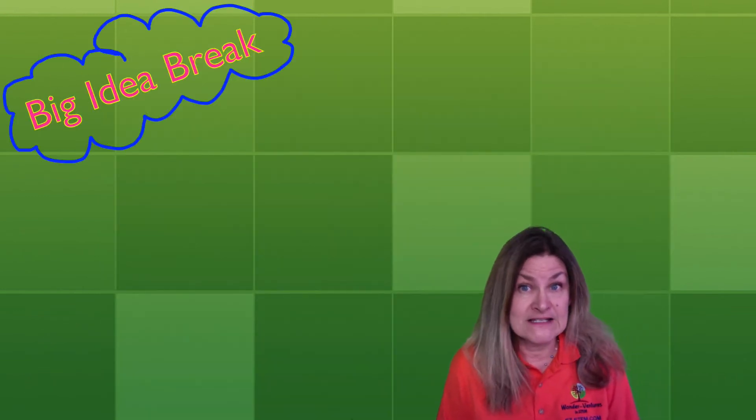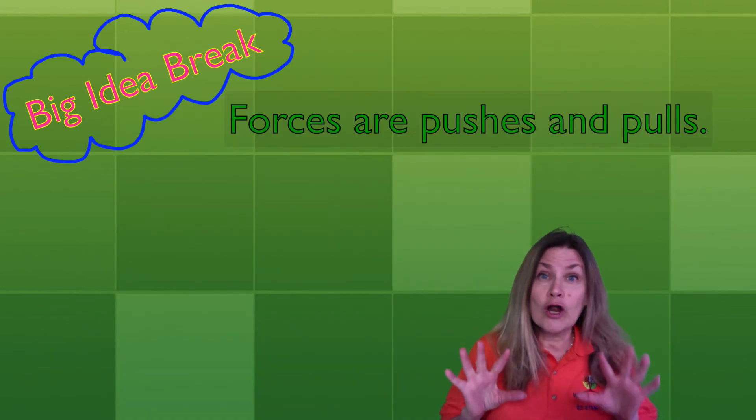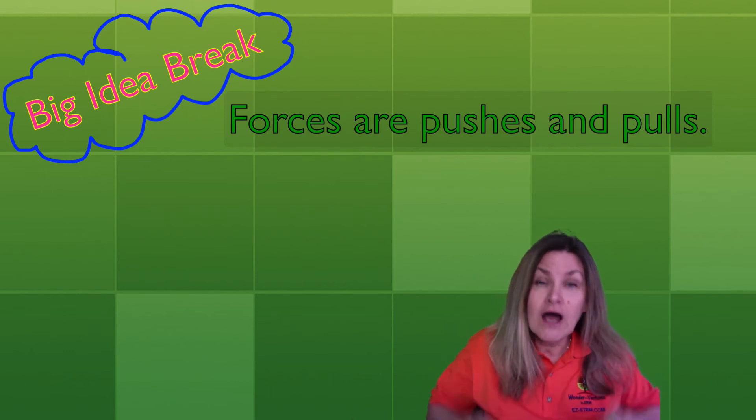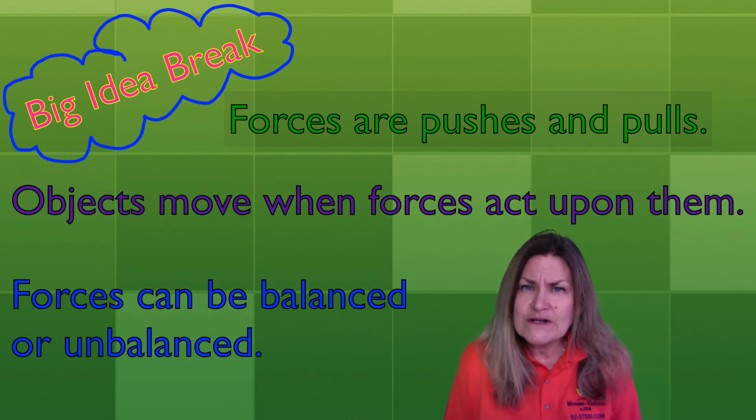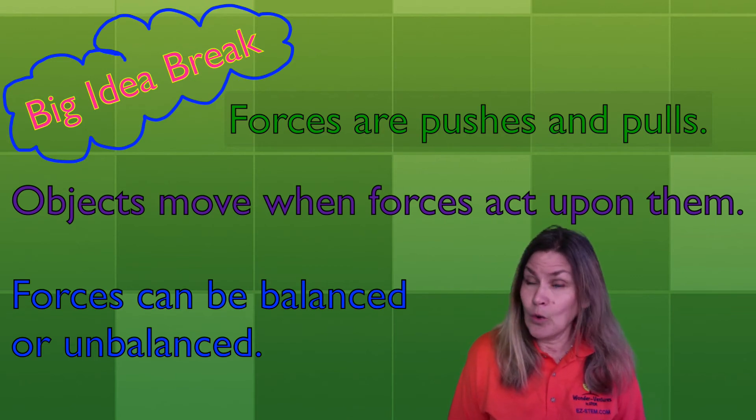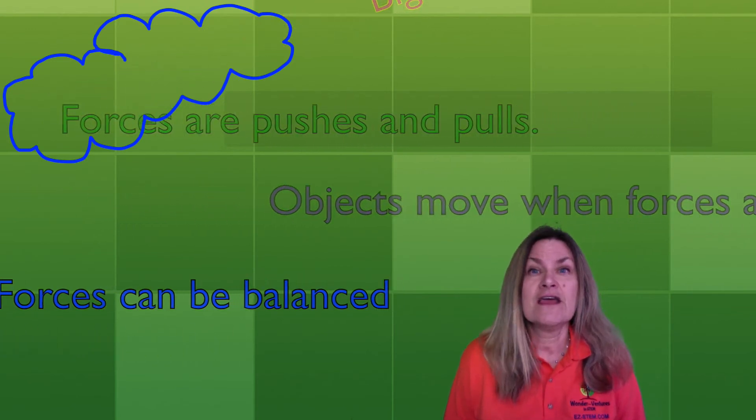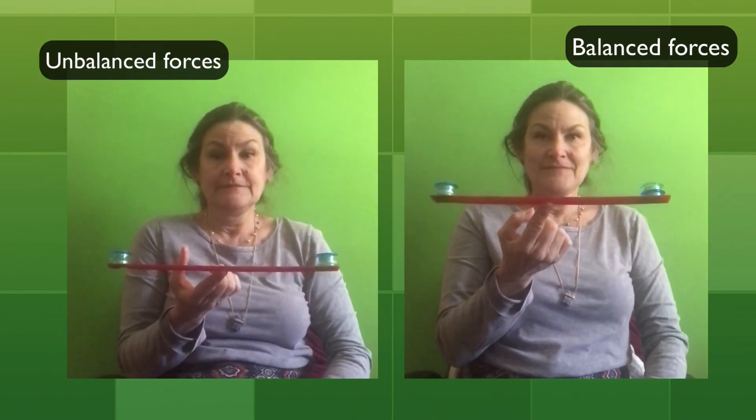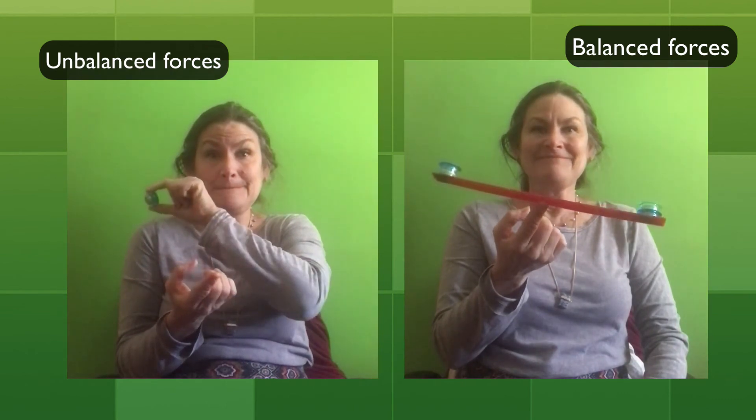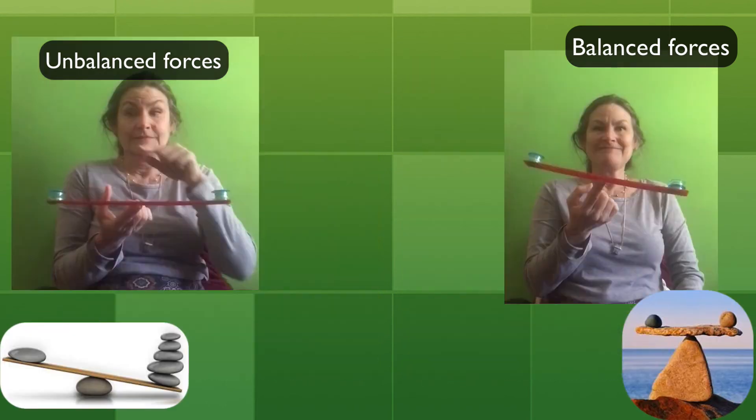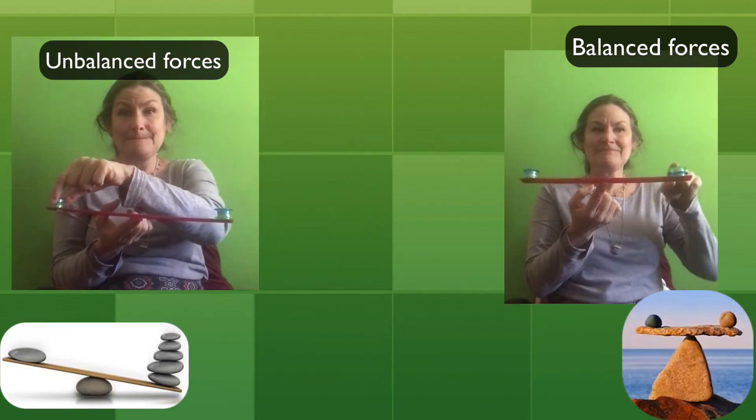It's time for a big idea break. Forces are pushes and pulls. Objects move when forces act upon them. Forces can be balanced or unbalanced. If the force on the ruler is unbalanced, then the ruler will fall or tilt or wobble. If the force is balanced, the ruler will remain steady on the finger.